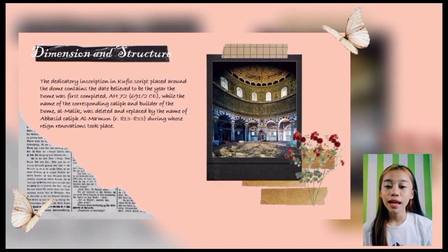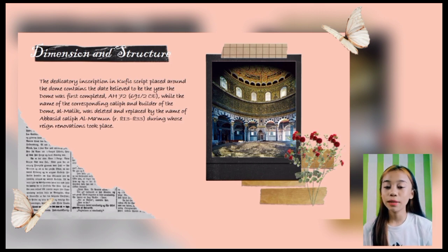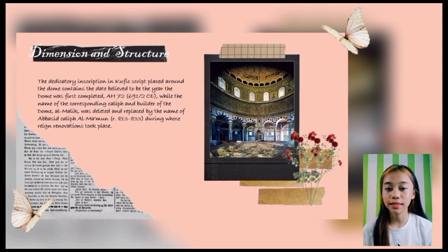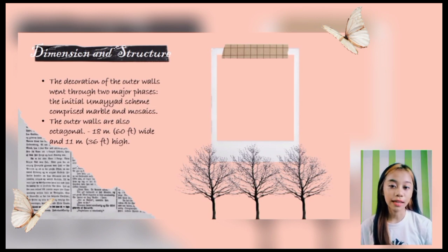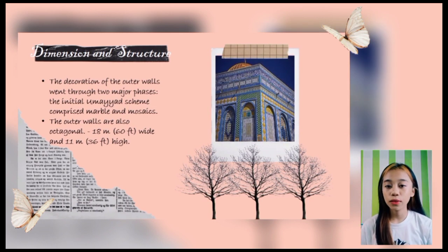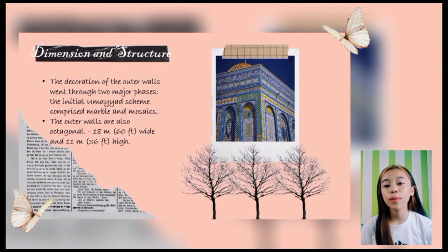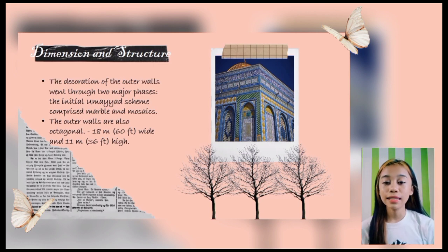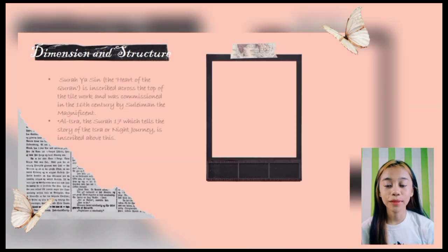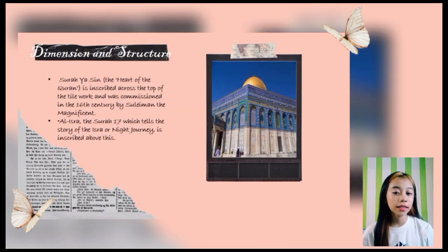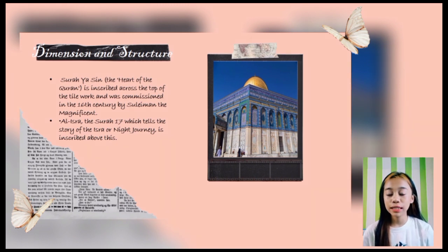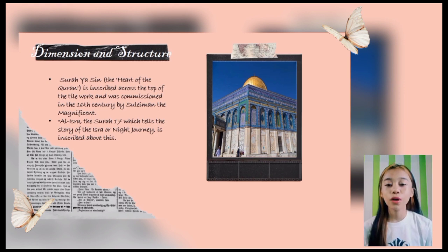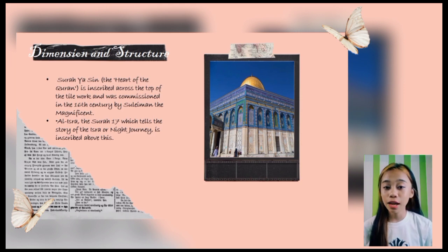The name of the original builder of the dome was deleted and replaced by the name of Abbasid Caliph al-Ma'mun, during whose reign renovations took place. The decoration of the outer walls runs through two-meter spaces, comprising marble and mosaics much like the interior walls. The Dome of the Rock has eight sides and the outer walls are octagonal in shape. The heart of the Quran is inscribed across the top of the tile work, commissioned in the 16th century by Suleiman the Magnificent. Al-Isra, Surah 17, which tells the story of the Night Journey, is inscribed above.